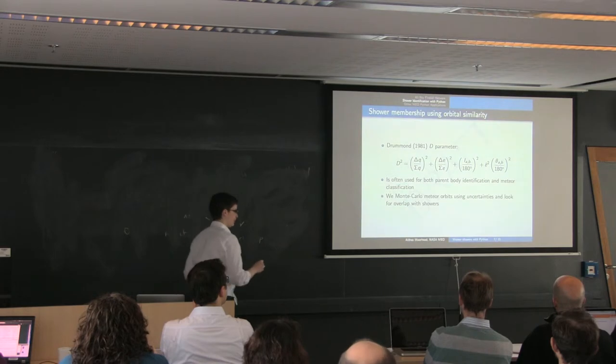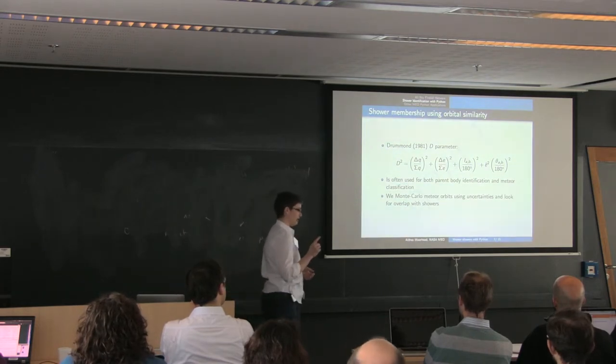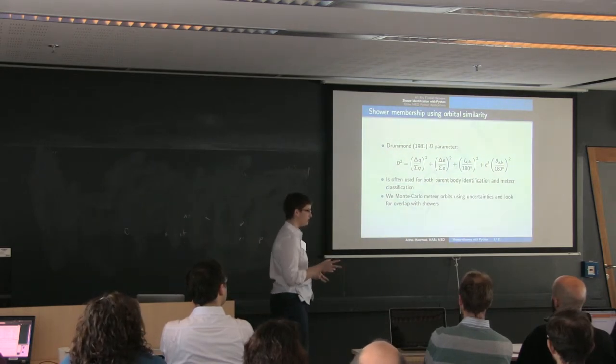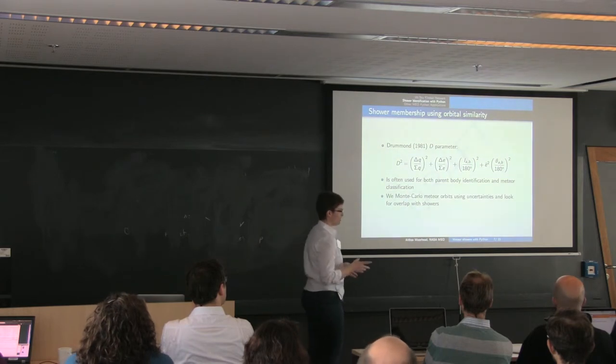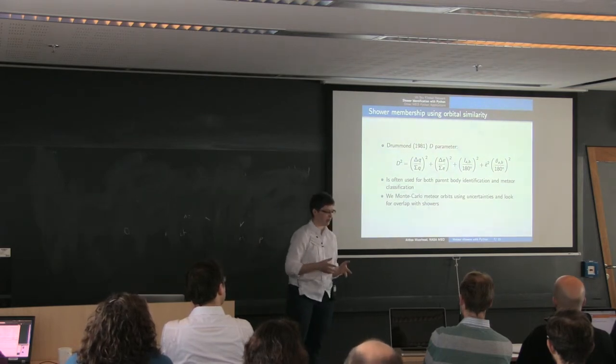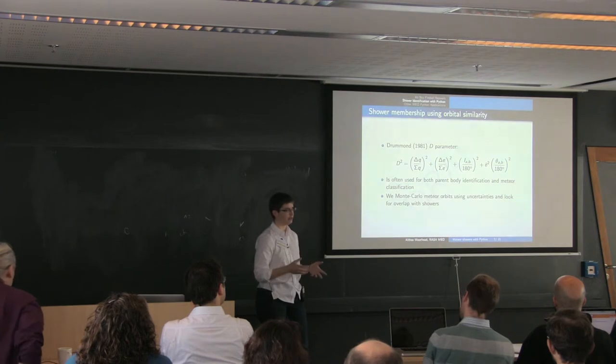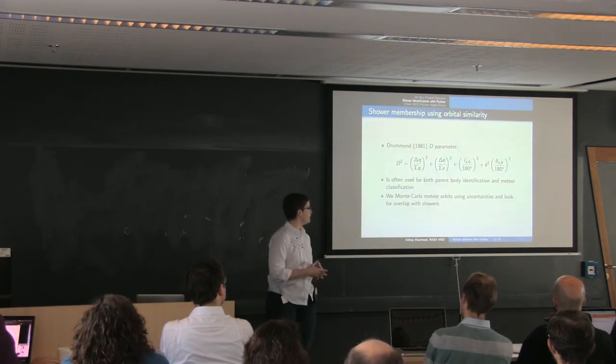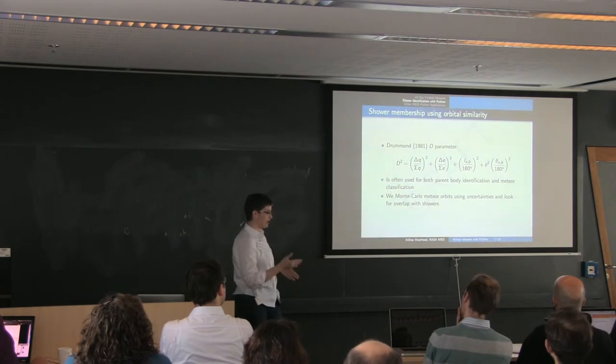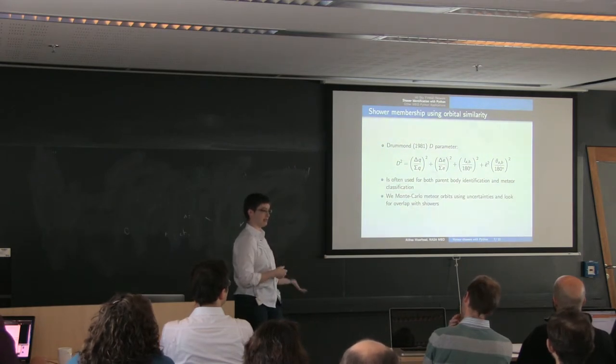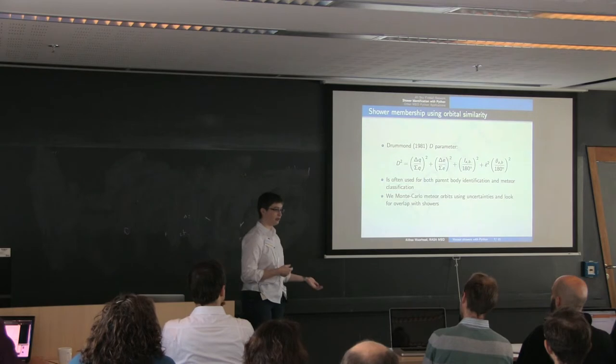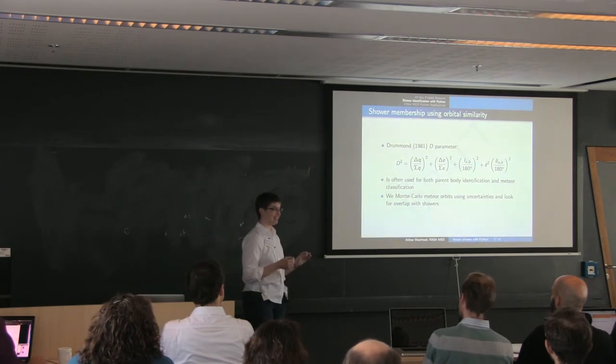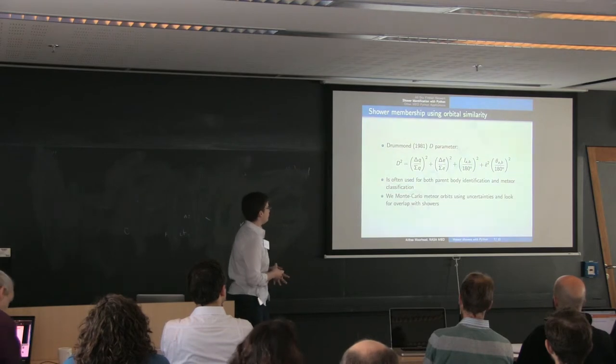Okay, so that's how I identify showers. To do the shower membership identification is a little trickier because our data, our meteor detections vary in their precision. And we measure some orbital elements much more precisely than others. For instance, we do pretty well with the orbit angles, but eccentricity is extremely difficult to measure precisely.